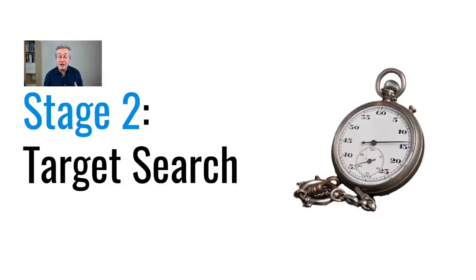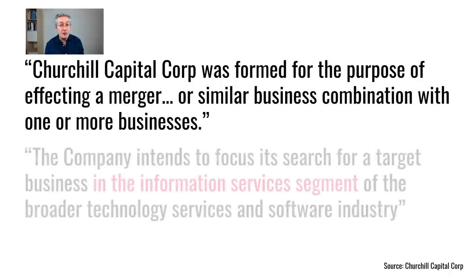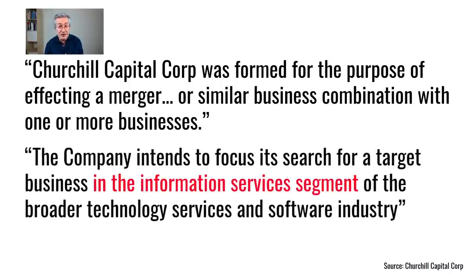In the second stage, the manager goes out to find a good acquisition target. They have a finite time — usually two years — and if no deal is found within that limit, investors get their money back net of fees. It's very unusual to hit that limit because the SPAC creators stand to gain enormously from completing a deal. Churchill Capital stated the SPAC was formed to effect a merger, and you did at least know the sector: the information services segment of the software industry.